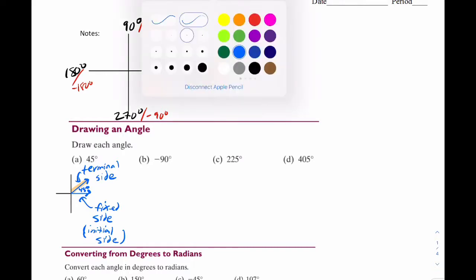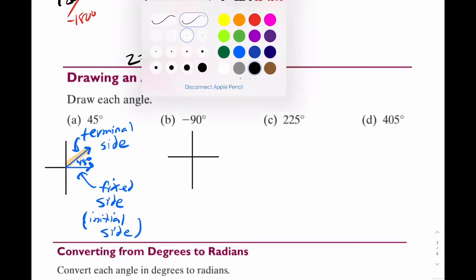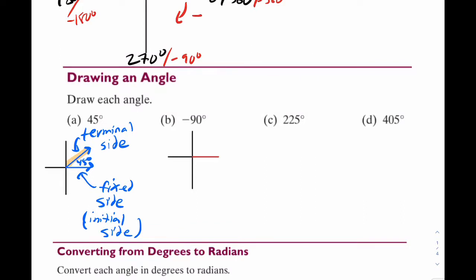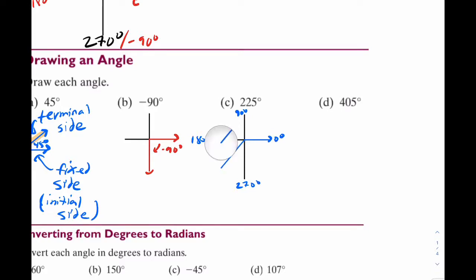For our next example, let's go to negative 90. Draw your x, y-axis again — here's your fixed side right there. Rotate negative 90; it's going to go down first, and there's your answer. Now let's go to 225. Think about where that would be: 0, 90, 180, 270. So 225 should be right in the middle of quadrant 3 — think of it as 45 past 180. So that would be your 225 degrees.